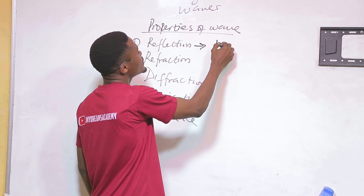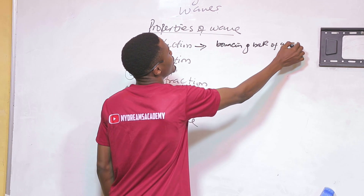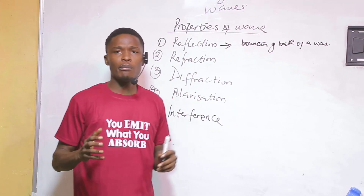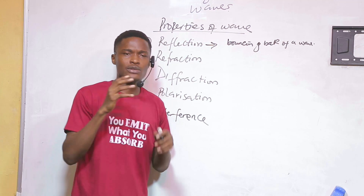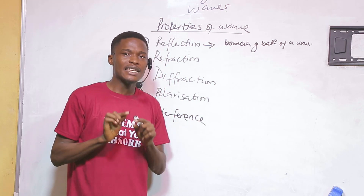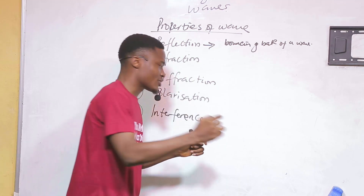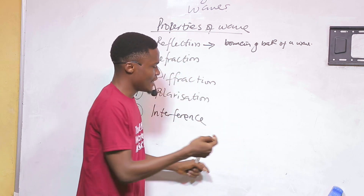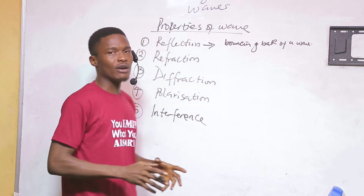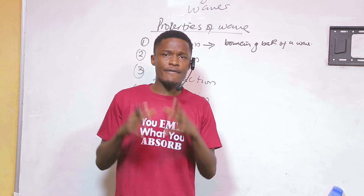When we say reflection, it simply means the bouncing back of a wave. Imagine you have a ball that you throw over a wall — that wall does not absorb the ball, so the ball bounces back when it hits that surface. The same thing happens to a wave when it strikes a surface, so if a light wave strikes a surface and bounces back, it is called reflection.